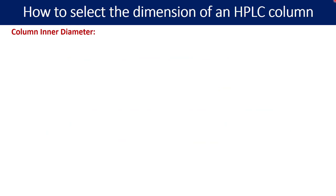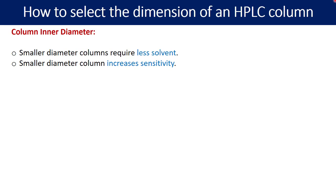Let us talk about the last parameter, the column inner diameter. The smaller diameter columns require less solvent. You can straightforward understand that the cost of the analysis can be reduced by having the smaller diameter columns. Smaller diameter column also increases the sensitivity for your analyte. It is a double bonus for you - the smaller diameter column reduces the solvent consumption and also helps in increasing the sensitivity of your analytical method.